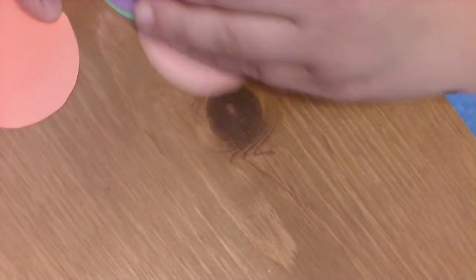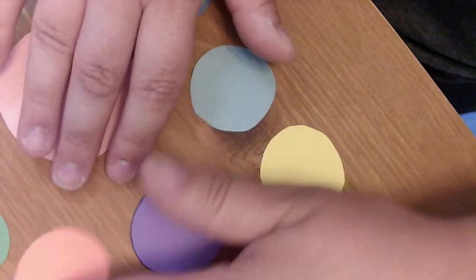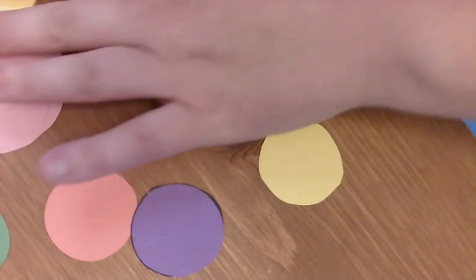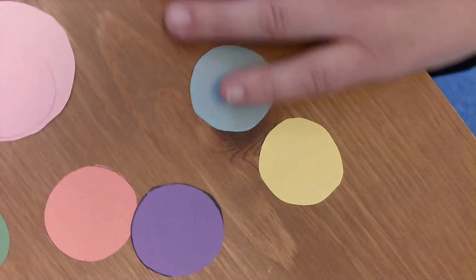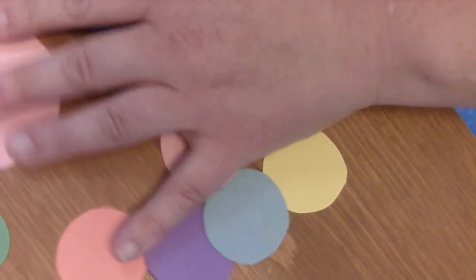Alright, you've got all your circles cut out now. Do you have a bunch of different sizes and shapes and colors, or did you do only a couple colors and one size? It's totally up to you, whatever you want to do. And now comes the fun part. Now we get to be creative.